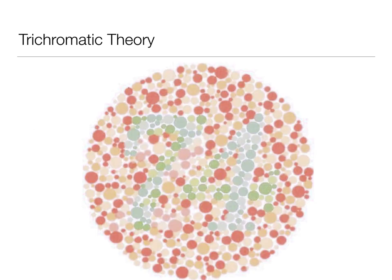Here's an example of red-green color blindness. Depending on your screen, we may disagree about what numbers are in the image — I personally see 74. Someone with red-green color blindness wouldn't be able to see any numbers here because they can't differentiate between the green dots and the red dots.